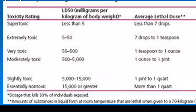For example, something would be considered super toxic if its LD50 was less than 5 milligrams per kilogram of body weight — in other words, taking less than 7 drops of this chemical. This would be something like nerve gas or botulism toxin.